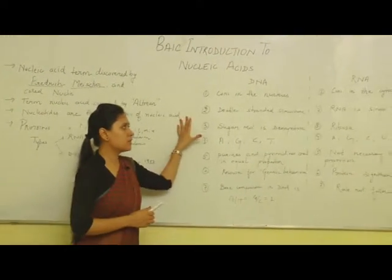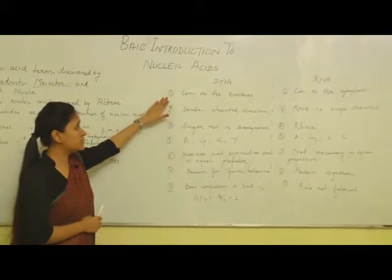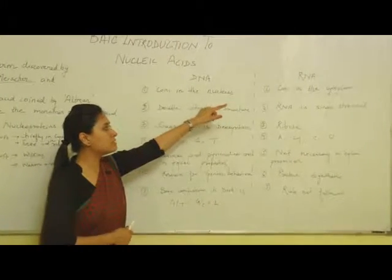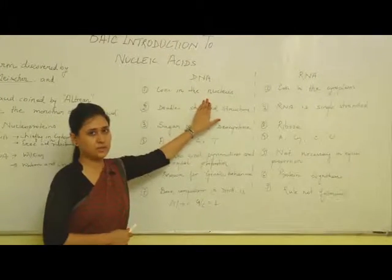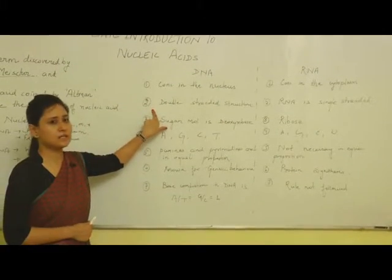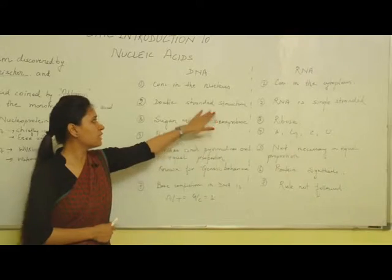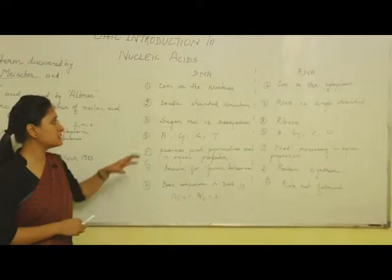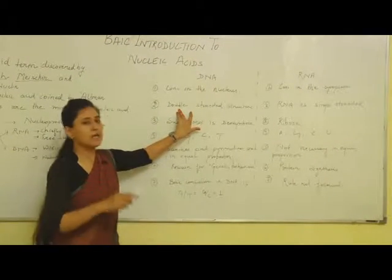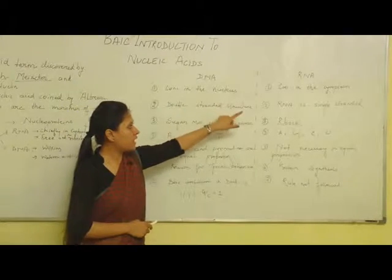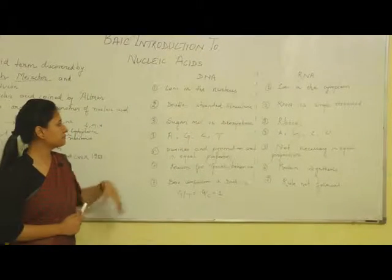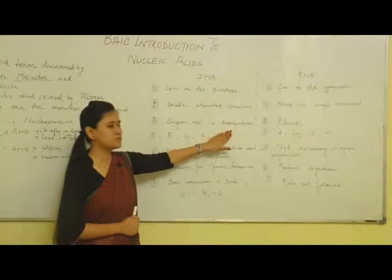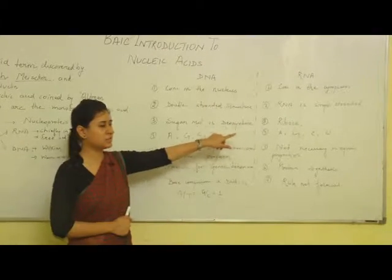Now we will discuss the differences between DNA and RNA. Difference one: DNA is present in the nucleus, whereas RNA is mainly concentrated in the cytoplasm. Difference two: DNA is a double-stranded structure, helically wound with hydrogen bonds, running clockwise around the central axis, whereas RNA is a single-stranded structure. Difference three: the sugar molecule in DNA is deoxyribose, whereas ribose sugar is present in RNA.